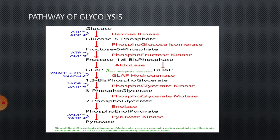In the seventh reaction, called dephosphorylation reaction, the phosphate ion is removed from 1,3-bPGA so that it is liberated in the form of an ATP molecule. Hence, this is called dephosphorylation and the enzyme is kinase. The product is 3-PGA, 3-phosphoglyceric acid. In the eighth reaction, 3-PGA is changed into 2-PGA. The phosphate ion present at the third carbon is shifted to the second carbon. That is why it is called intramolecular shift. The enzyme is mutase and the product we get is 2-PGA, 2-phosphoglyceric acid.